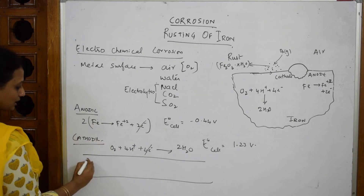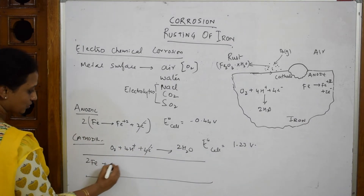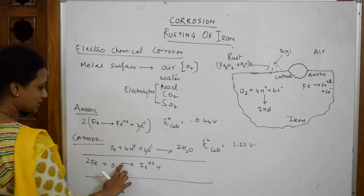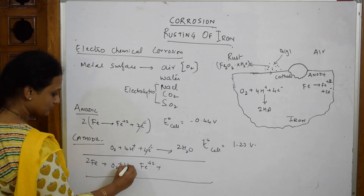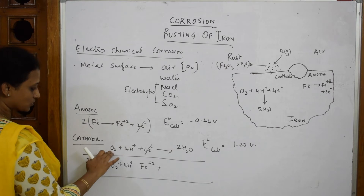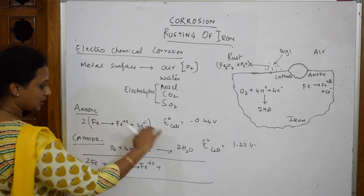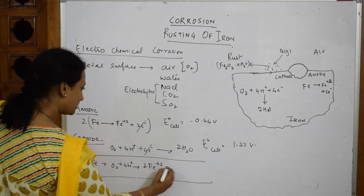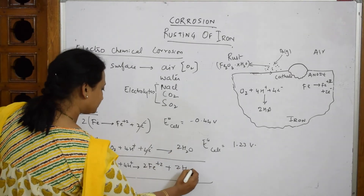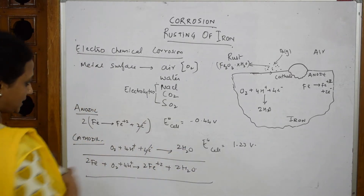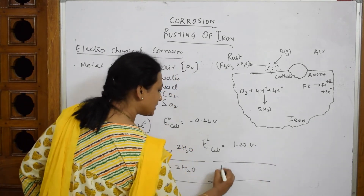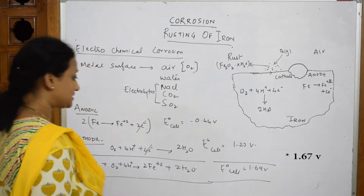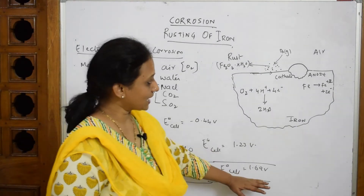The overall cell reaction gives: 2Fe²⁺ + 2H₂O as products. The calculated cell voltage, E°cell, is equal to 1.69 V. This completes the cell reaction for the electrochemical corrosion of iron.